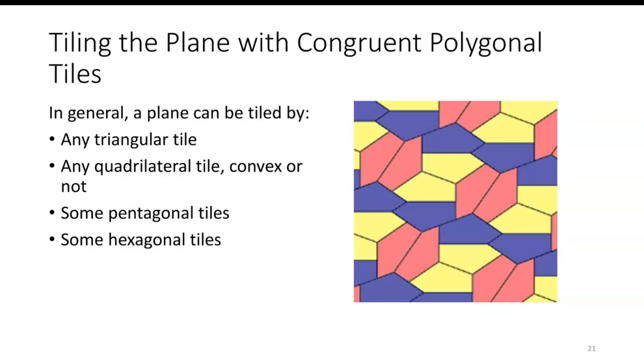Whether it's convex or concave, it will tessellate. Some pentagonal tiles will tessellate. You see some examples here. Not all pentagons tessellate. For instance, the regular pentagon does not tessellate. Some hexagonal tiles tessellate. The regular hexagon does, but not all hexagons tessellate. These are just some examples of tilings with congruent polygonal tiles.